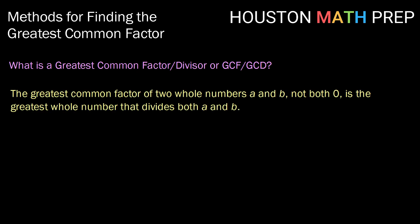The greatest common factor of two or more whole numbers A and B, both of which can't be zero, is the greatest whole number that divides both A and B. We often denote this using capital GCF or if we're using divisor GCD of A comma B.